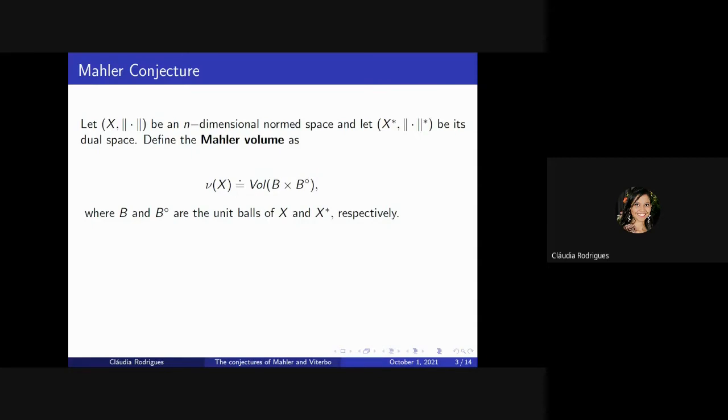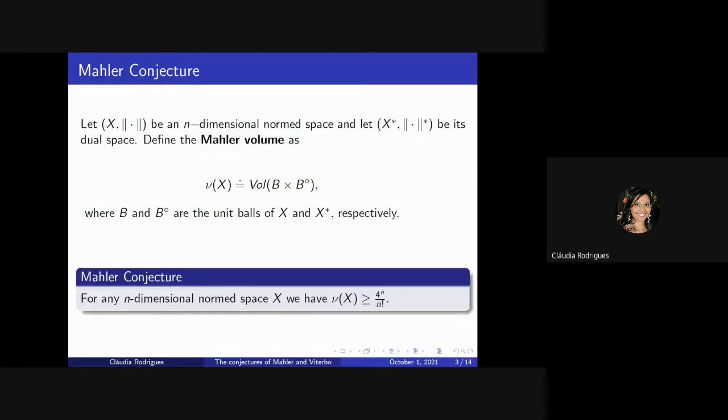Given X, an n-dimensional normed space, and let X star be its dual vector space, define the Mahler volume as V(X) equals to volume of B times B naught, where B and B naught are the unit balls of X and X dual. The Mahler conjecture says, for any n-dimensional normed space X, we have V(X) greater than or equal to 4 to the N divided by factorial N. This is exactly the value when X equals R to the N, and we have the unit balls with the Euclidean norm.